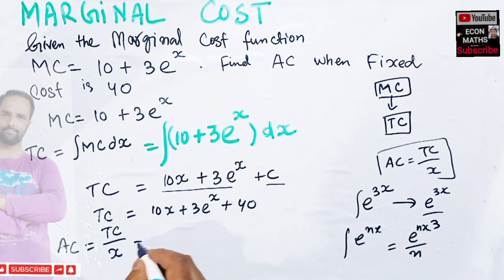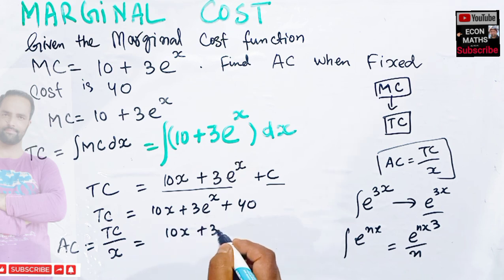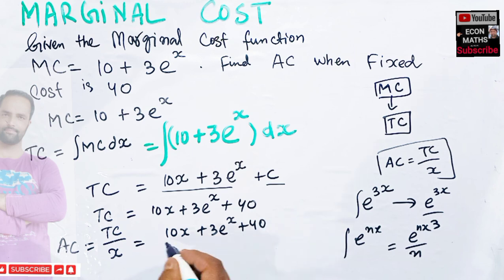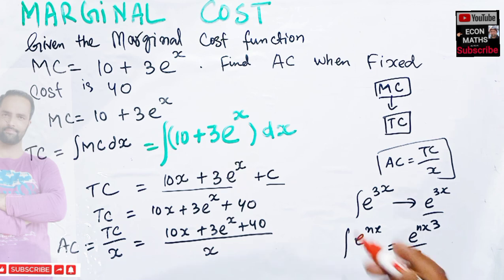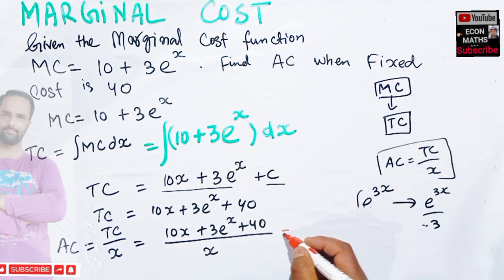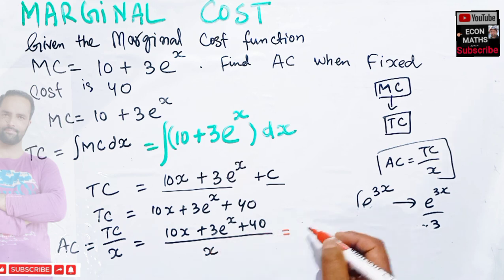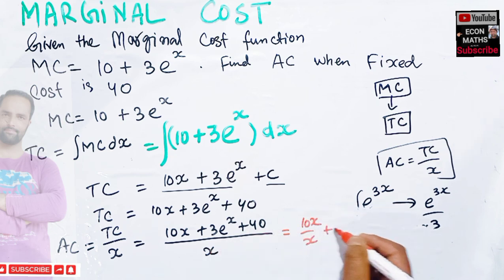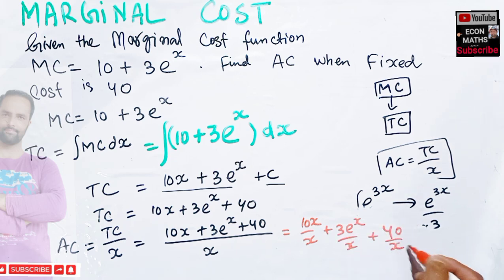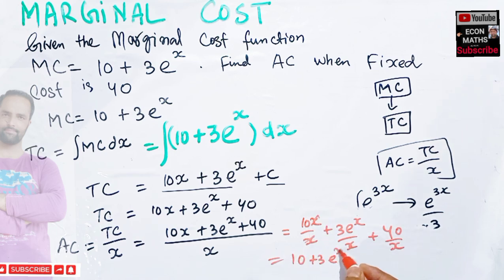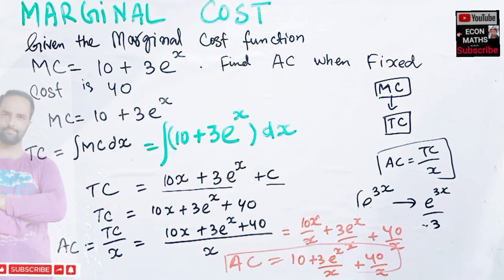Now, the average cost is total cost divided by output. So we divide 10x + 3e^x + 40 by x, giving us 10x/x + 3e^x/x + 40/x. This simplifies to 10 + 3e^x/x + 40/x, and this is our average cost.